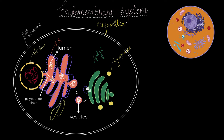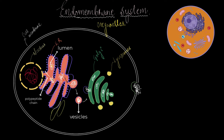Those vesicles go and fuse with the membrane of the Golgi apparatus. In the Golgi apparatus, the polypeptide chains undergo further modifications, and a vesicle is formed at the end of the Golgi that holds those proteins and is sent to fuse with the cell membrane, finally releasing them out of the cell. Sometimes the vesicles formed from the Golgi don't leave the cell — instead they stay inside forming either lysosomes or vacuoles.